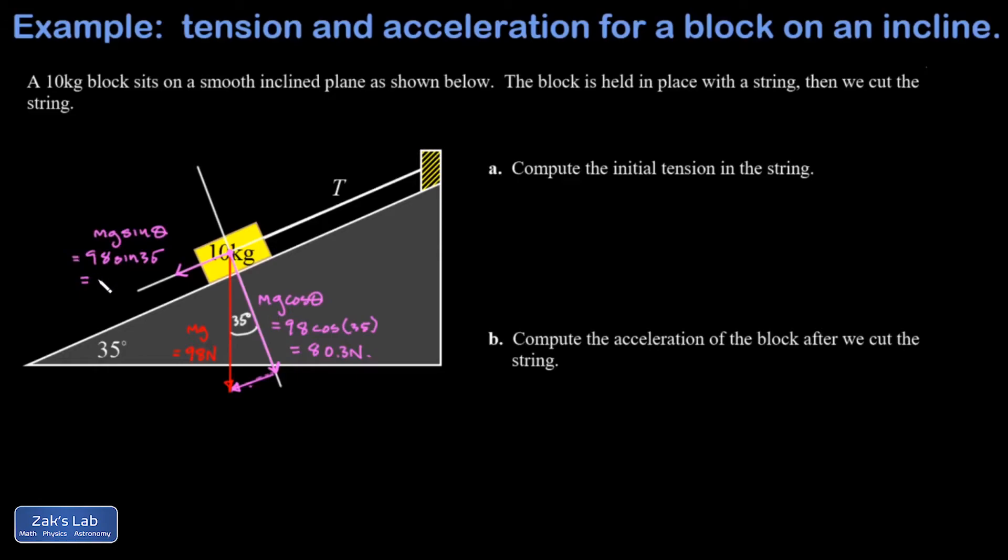All right, so when we see an inclined plane problem we almost just do that decomposition reflexively before we even read what the question is. If I now read part A, I'm asked for the initial tension in the string. So if I go ahead and put this force vector into the force diagram, there's the tension. A tension is a force exerted by a string. And we know from the way this problem is set up the object is not going to move.